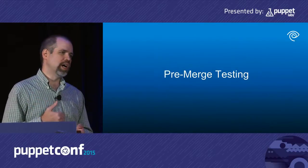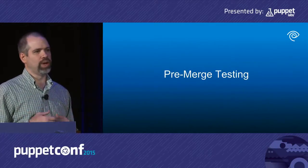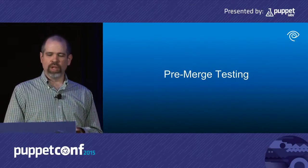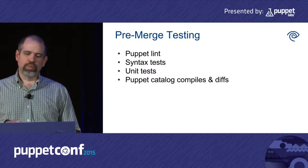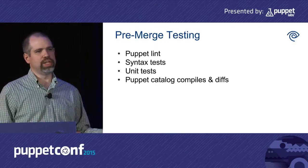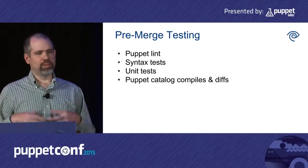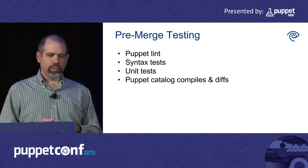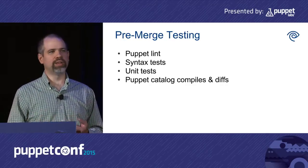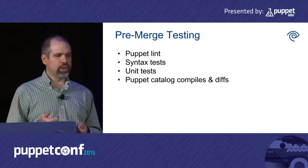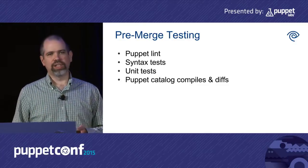As Matt talked about earlier, we do pre-merge testing as part of our code review process. The question we're trying to answer is: how can we be sure that when we go to do a deployment, we won't have Puppet catalog compile failures? We found that automated pre-merge testing is a great way to cut down on those problems. Whether you're using Gerrit or GitHub pull requests, you're waiting for a human to look at code — so it makes sense to provide that reviewer with as much information as possible. Each time a new change goes up for review, our pre-merge test jobs trigger automatically. Most are simple: Puppet lint, syntax checks, unit tests. But one thing we do that is a little unusual is Puppet catalog compiles and diffs.